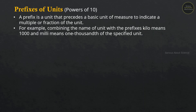For example, the prefix kilo means 1000, so 1 kilometer is 1000 meters and 1 kilogram is 1000 grams. The exact reciprocal is milli: milli means 1 by 1000, so 1 millimeter is 10 raised to minus 3 meters, and 1 milligram is 10 raised to minus 3 grams.